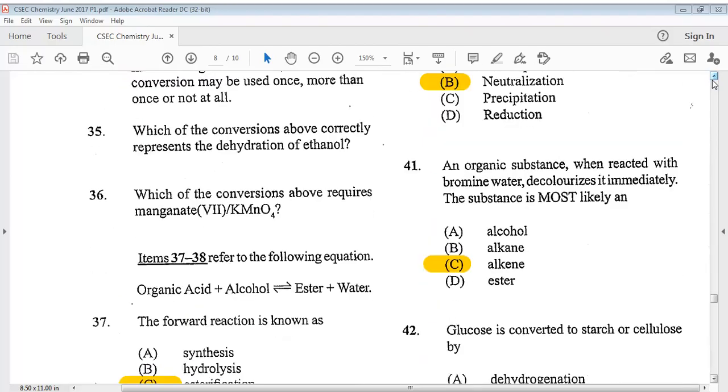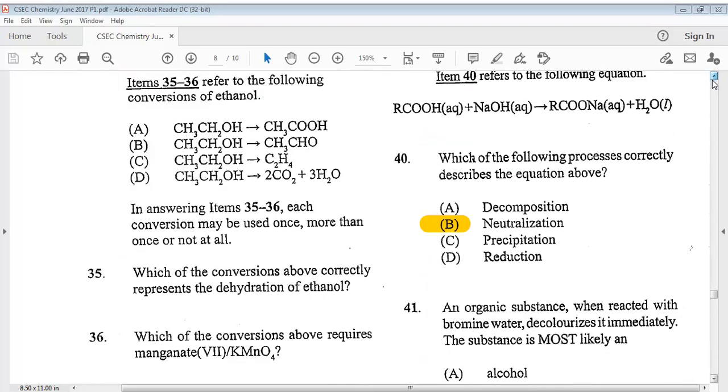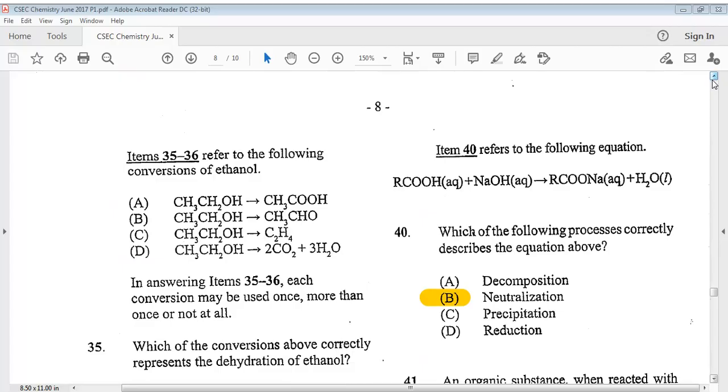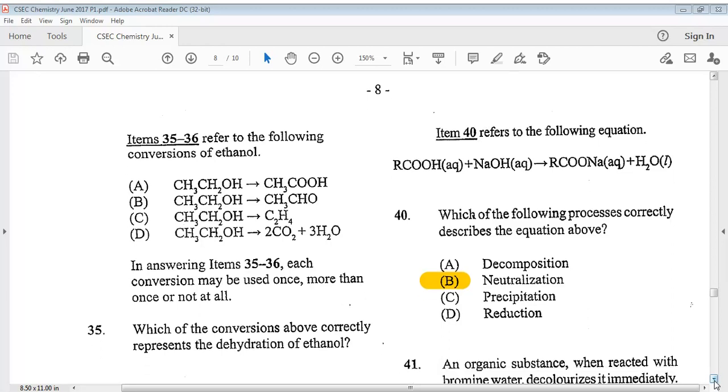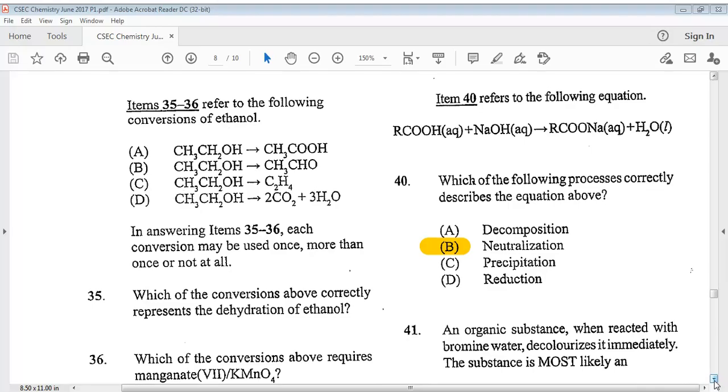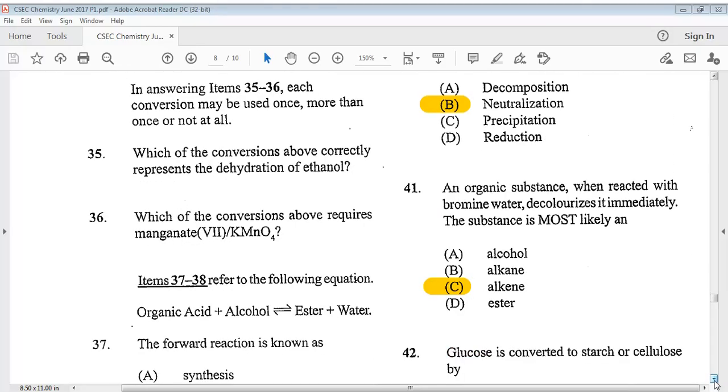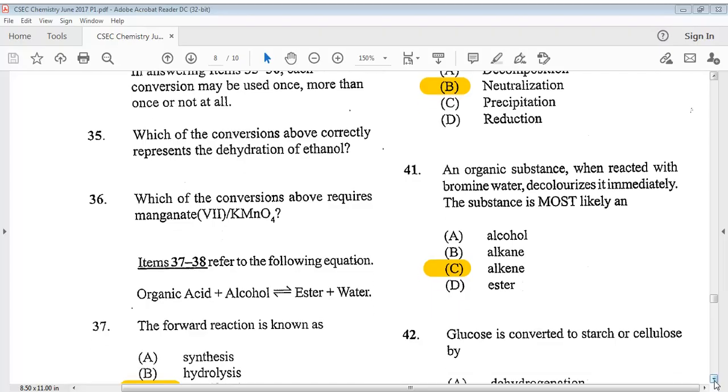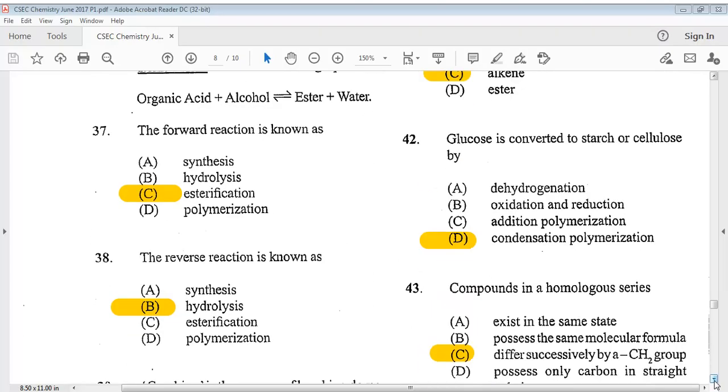Let's go on to question 40. It says, so we have, it refers to the following equation. So you take a look at the equation. It says which of the following processes correctly describes the equation above? The answer is B, neutralization. Question 41. An organic substance when reacted with bromine water decolorizes it immediately. The substance is most likely an C, alkene. Question 42. Glucose is converted to starch or cellulose by? The answer is D, condensation polymerization.